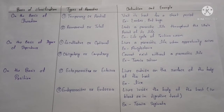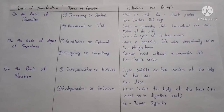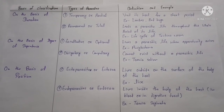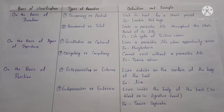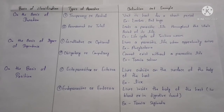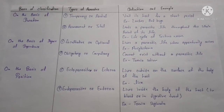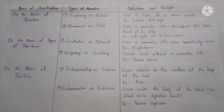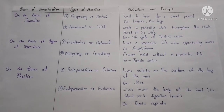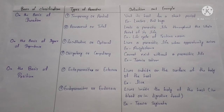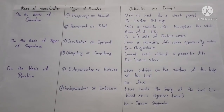Third, on the basis of position, there are two types: ectoparasite and endoparasite. Ectoparasites live outside on the surface of the body of the host. Example: lice. Endoparasites live inside the body of the host, such as in the blood or digestive tract. Example: Taenia solium.